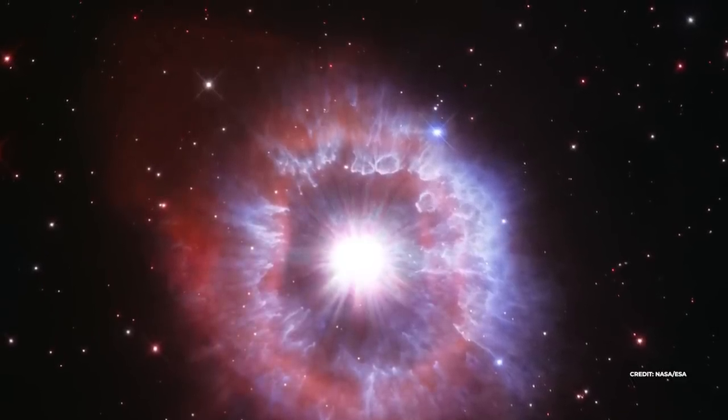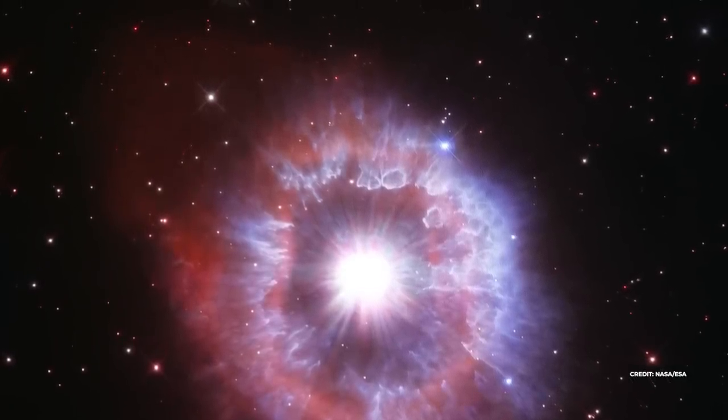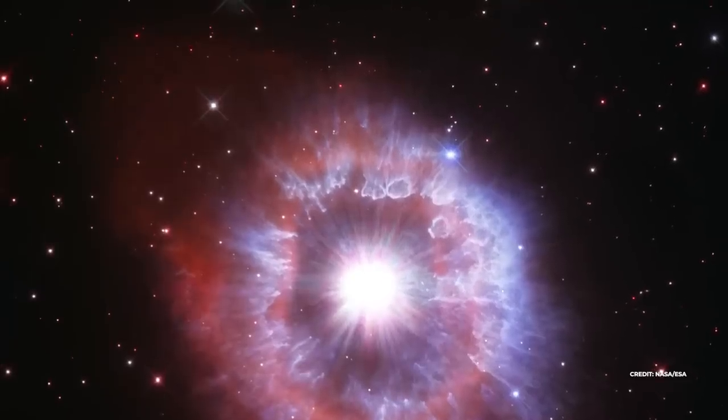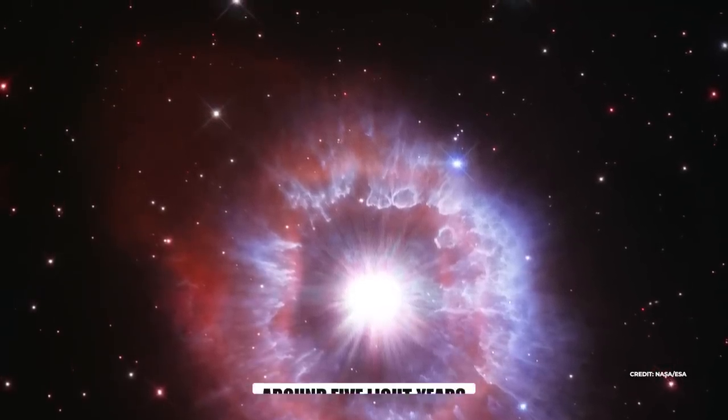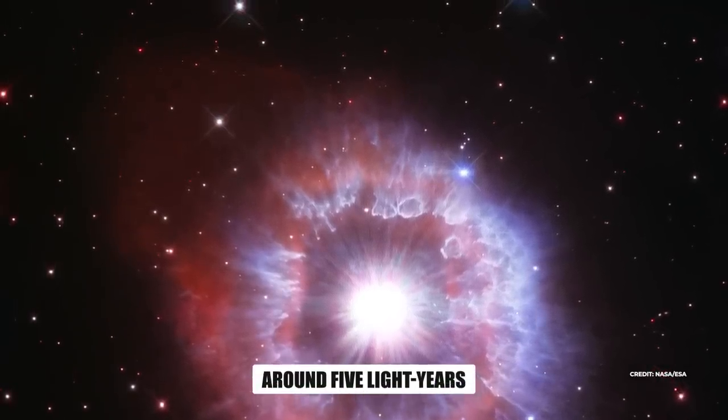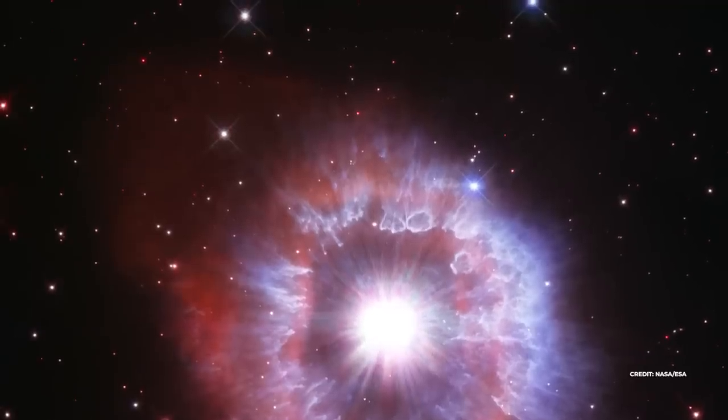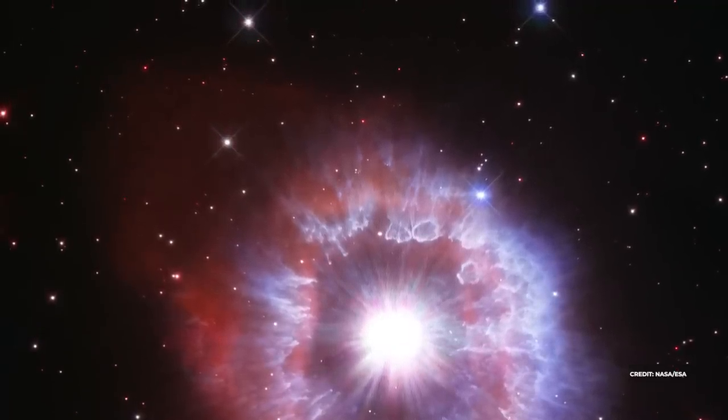The star, which goes by the name A.G. Karanay, is encased in a progressively wider disk of gas and dust. The width of the nebula is around five light-years, which is equivalent to the distance that separates us from Alpha Centauri, the star that is the closest to us.